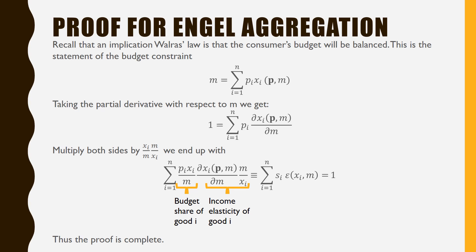Now multiply both sides of this equation by the Marshallian demand for good x_i over m, times m over x_i — so this is essentially multiplying both sides by 1. And we get this nice result, which is our budget share of good i times our income elasticity of good i. Thus the proof is complete.